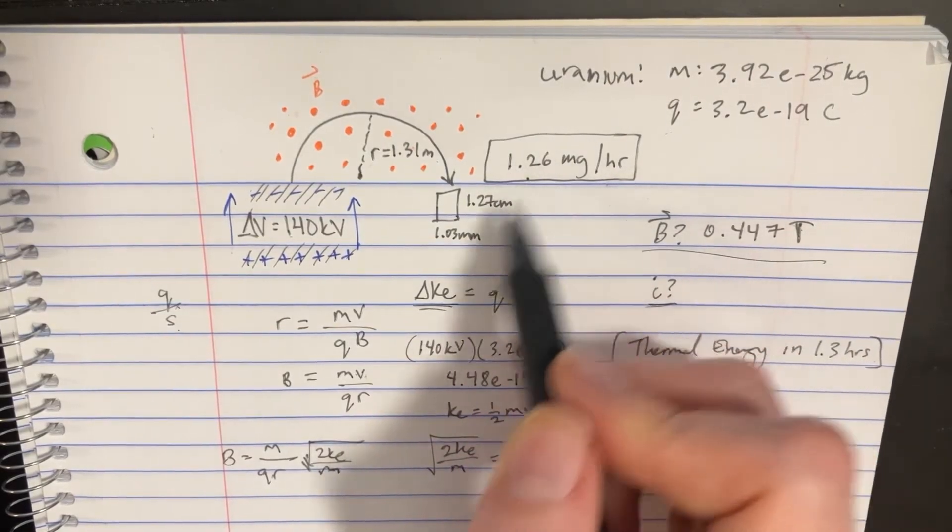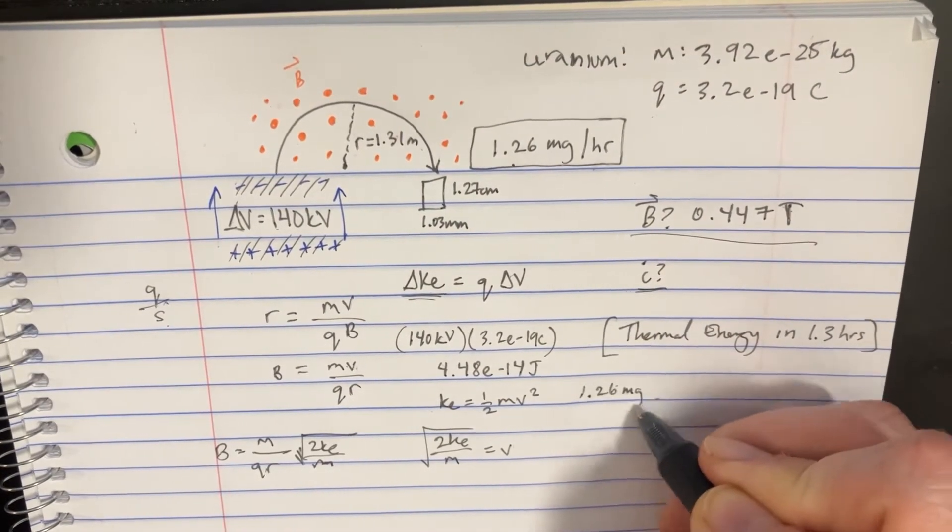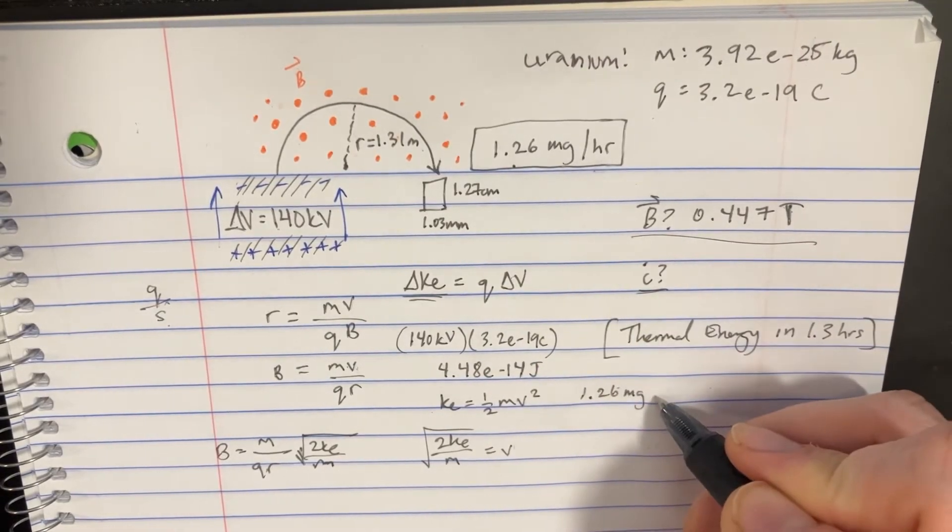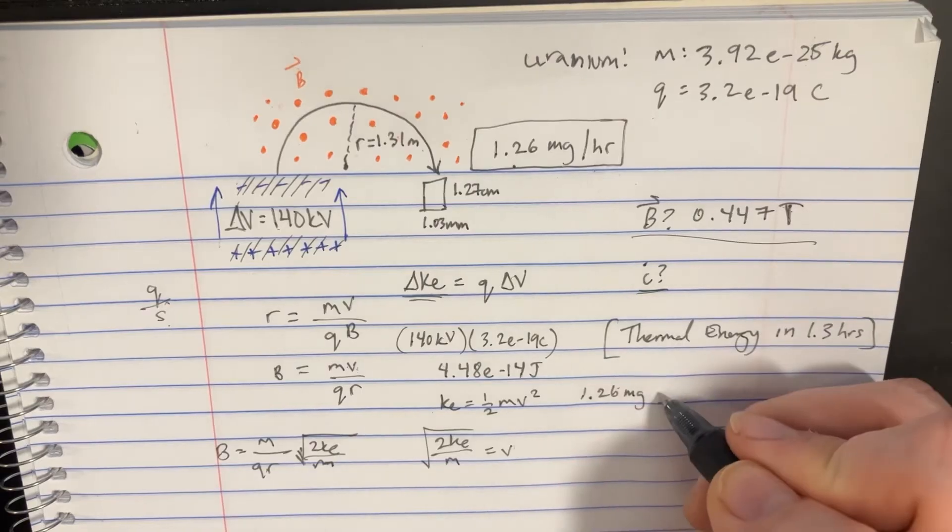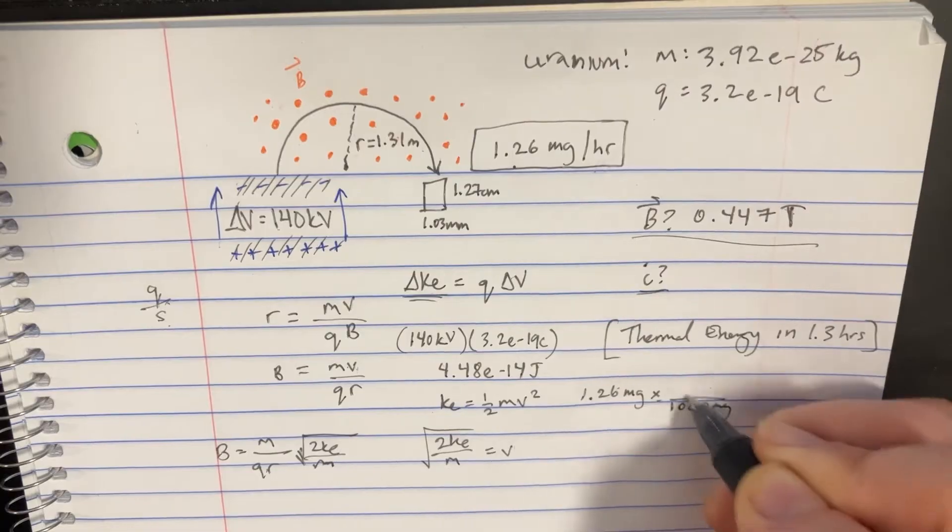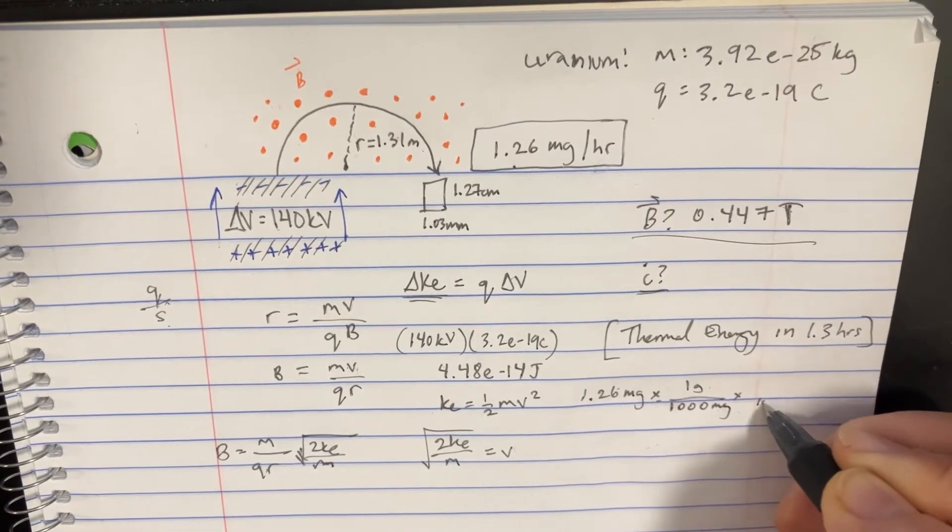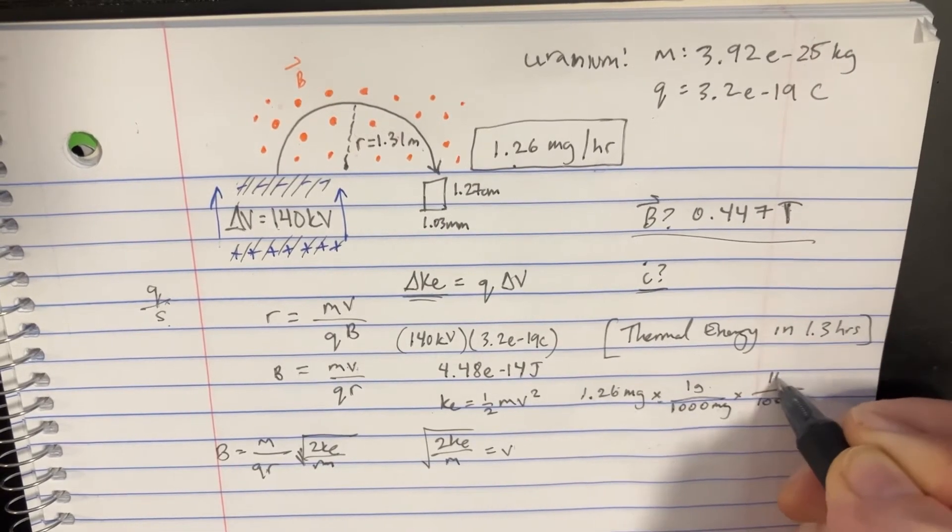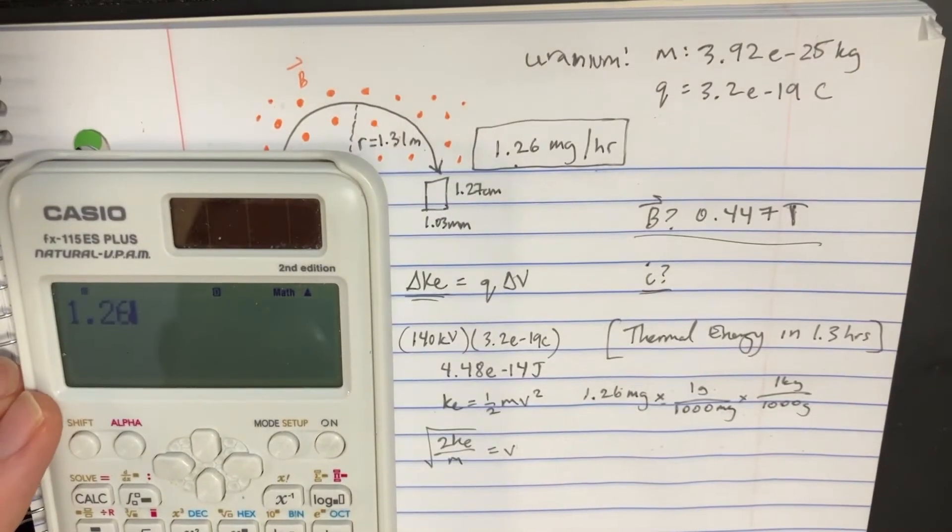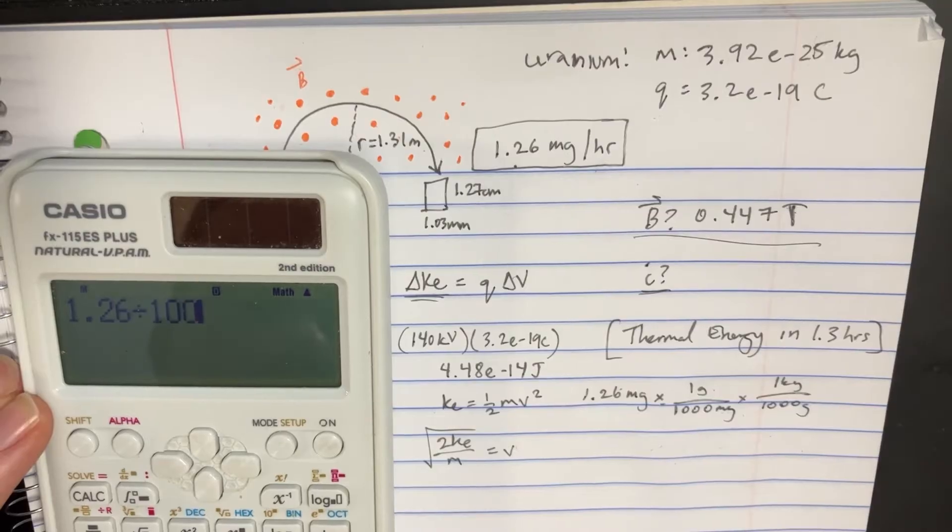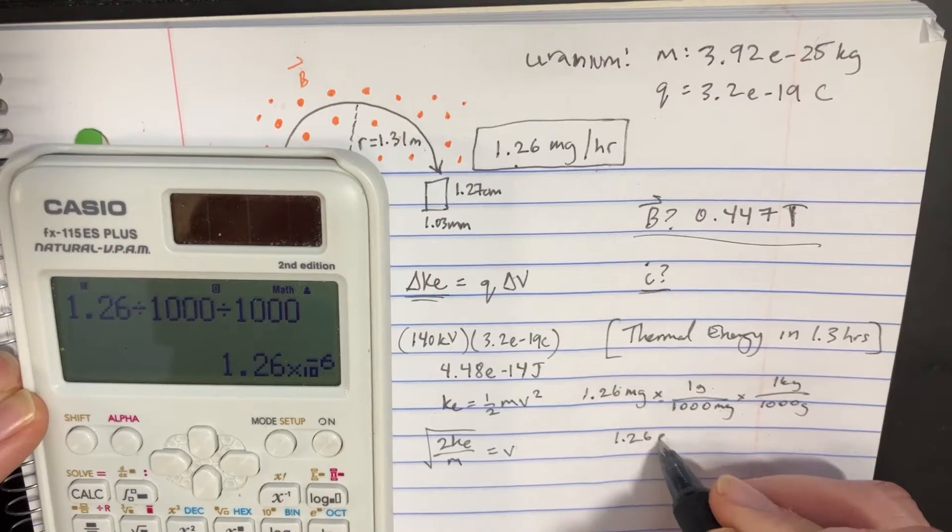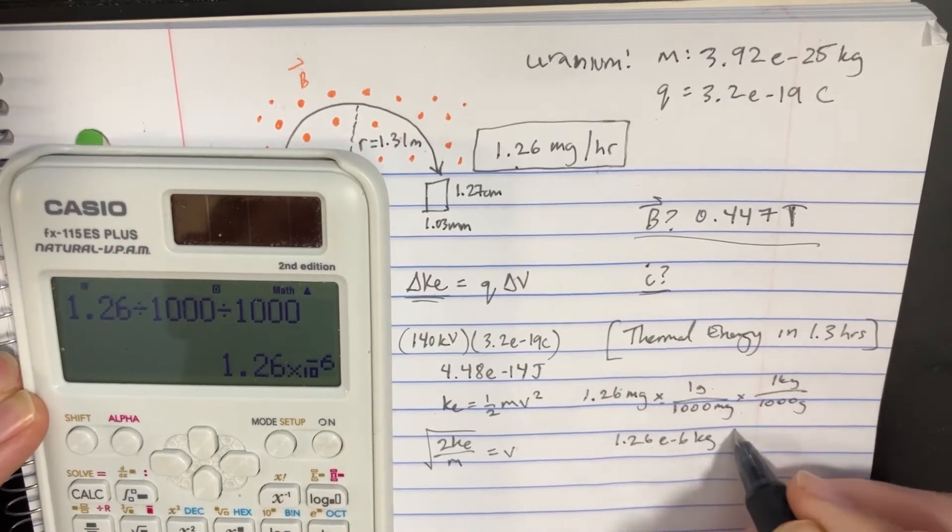We're going to get 1.26 milligrams per hour but we're going to convert this to kilograms per hour. We'll multiply this by a thousand milligrams per gram and then one thousand grams per kilogram. If we do that on the calculator we'll get 1.26 divided by a thousand divided by a thousand. That should be 1.26 e to negative 6 kilograms per hour.